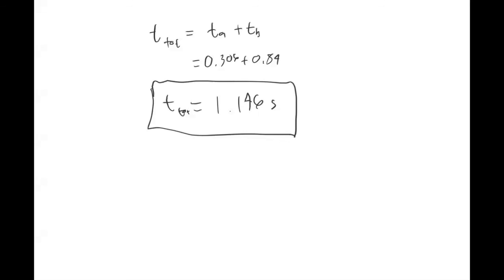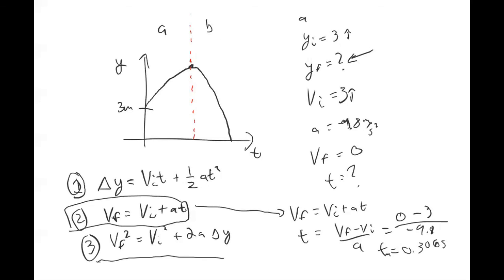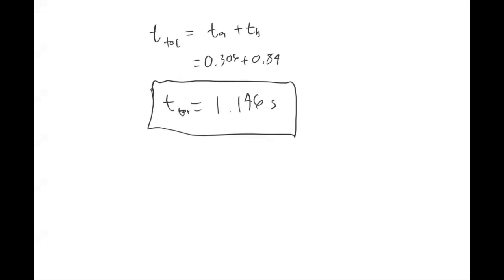Another reason to consider breaking your problem into different pieces: some problems will be parts A through D and ask for intermediate steps like the max height, the velocity at the max height, or how long to reach the max height. If the total problem just asks for total time, you can use the quadratic formula. But if it asks for different pieces along the way, it might be useful to break it into these different pieces and then add your times together.